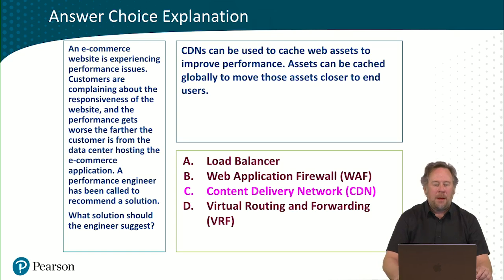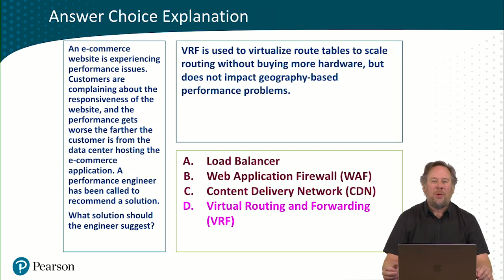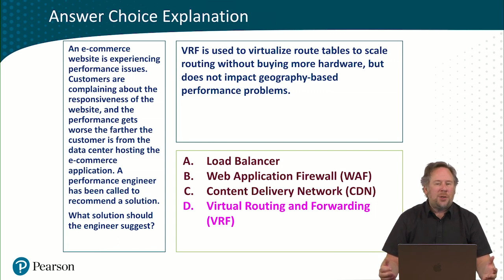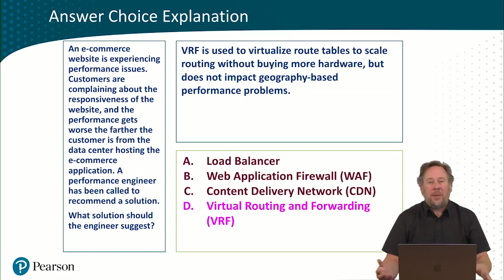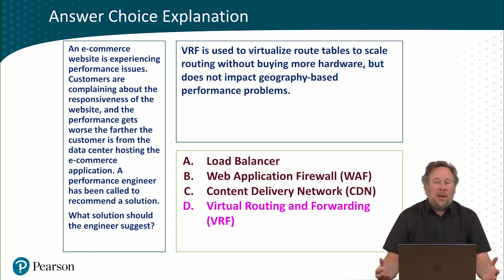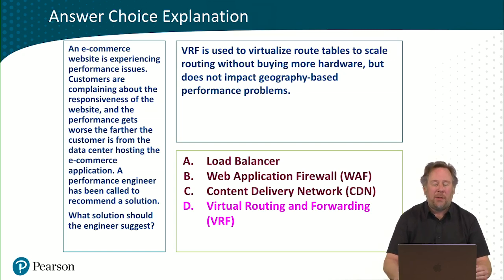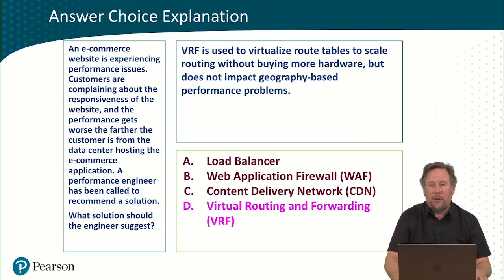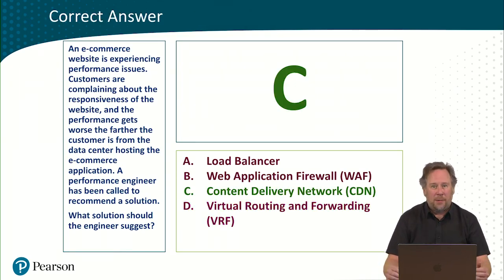Answer D is VRF, virtual routing and forwarding. This is used to provide a layer of virtualization around route tables in order to scale routing without having to buy new routing hardware. This is also not going to impact geography-based performance issues. After looking at all these answer choices, there's only one that meets the requirements, and that's C.